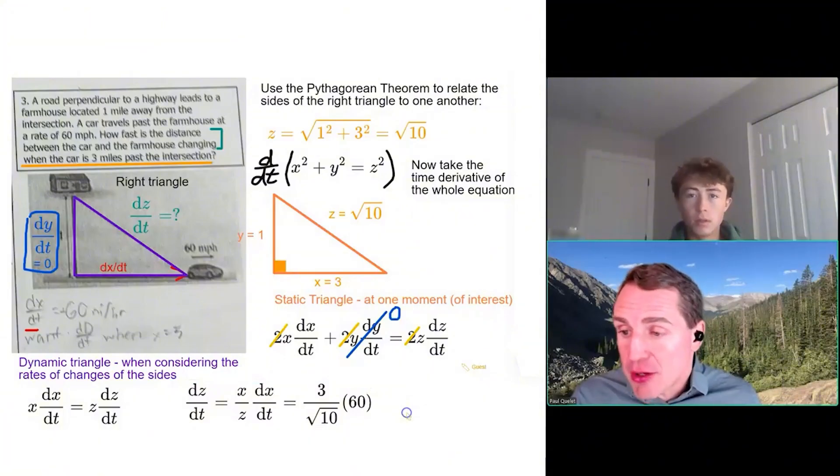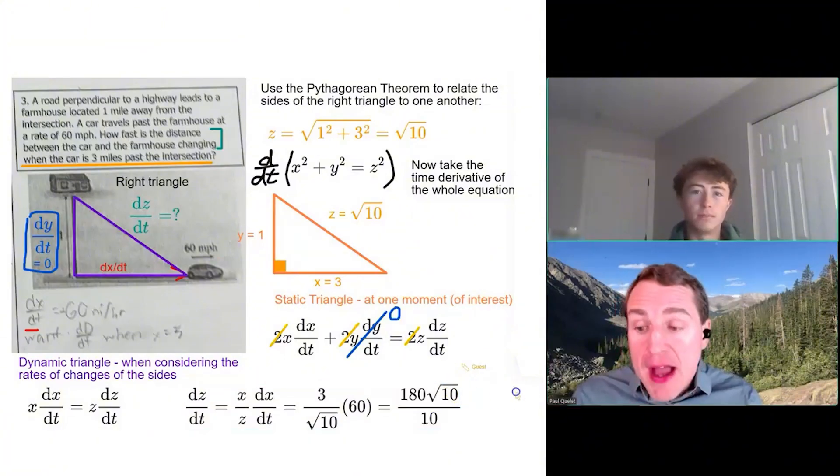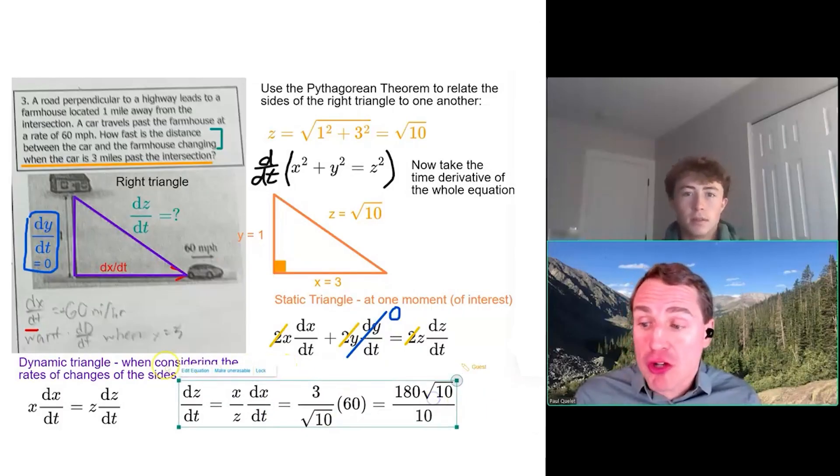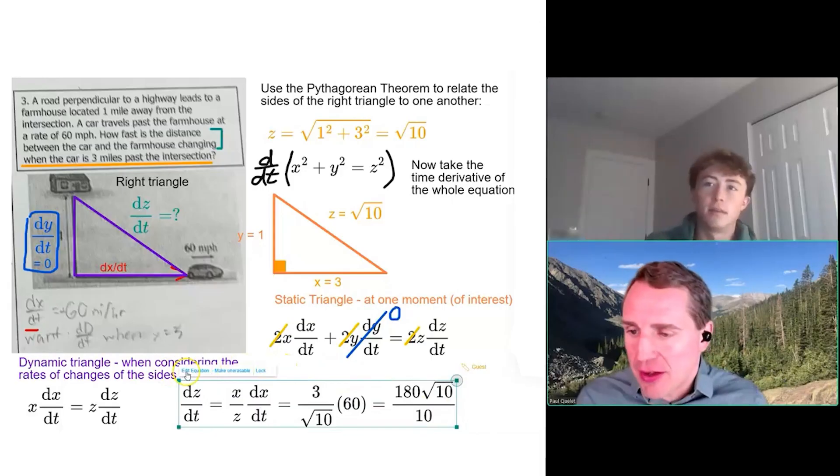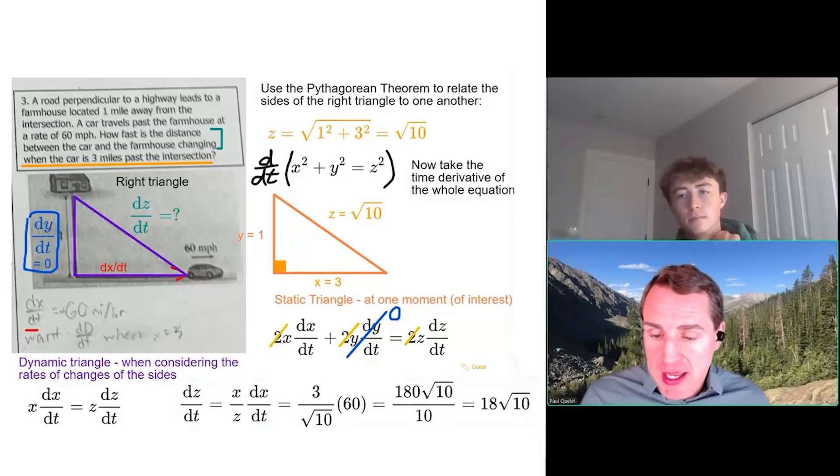Now, by the way, would it be a good idea to rationalize this? Yeah, in fact, probably we should because 10 and 180, I think we're going to get some cancellation there. So the exact value for the final answer is 18 root 10.